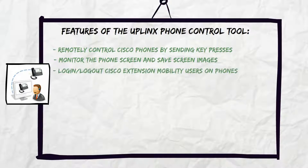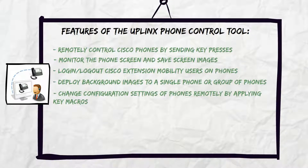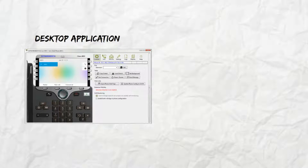Additional features include login and logout of Cisco Extension Mobility users on phones, deploying background images to a single phone or a group of phones, changing configuration settings remotely by applying key macros, viewing phone status and counters, and listening into a voice call with Cisco silent voice monitoring. Web-only features include generating phone reports.